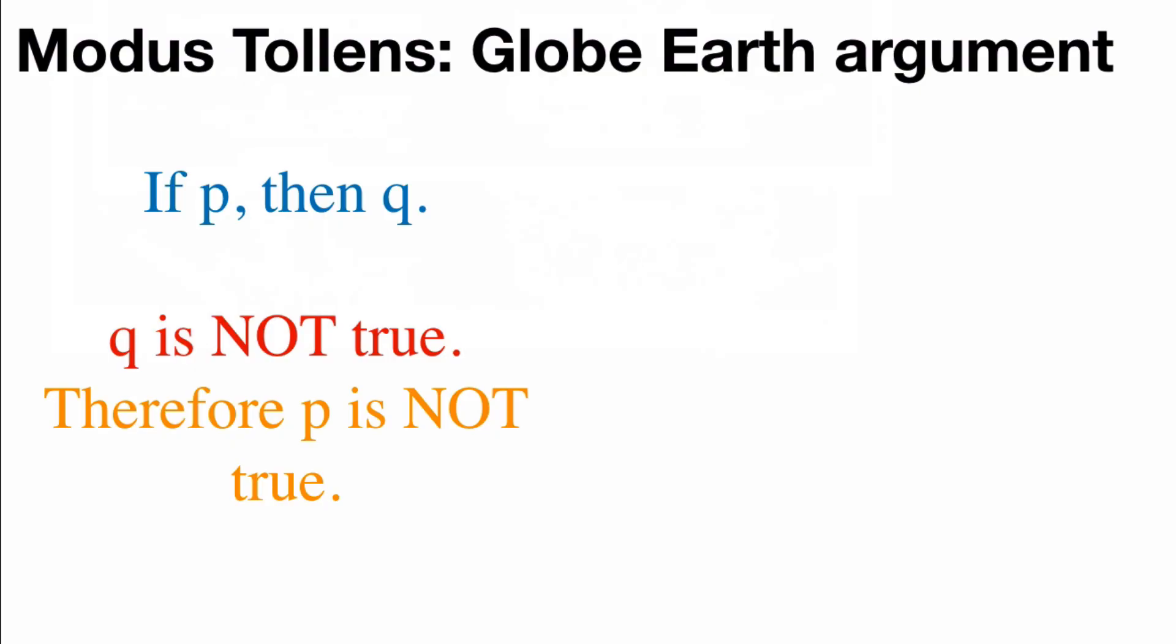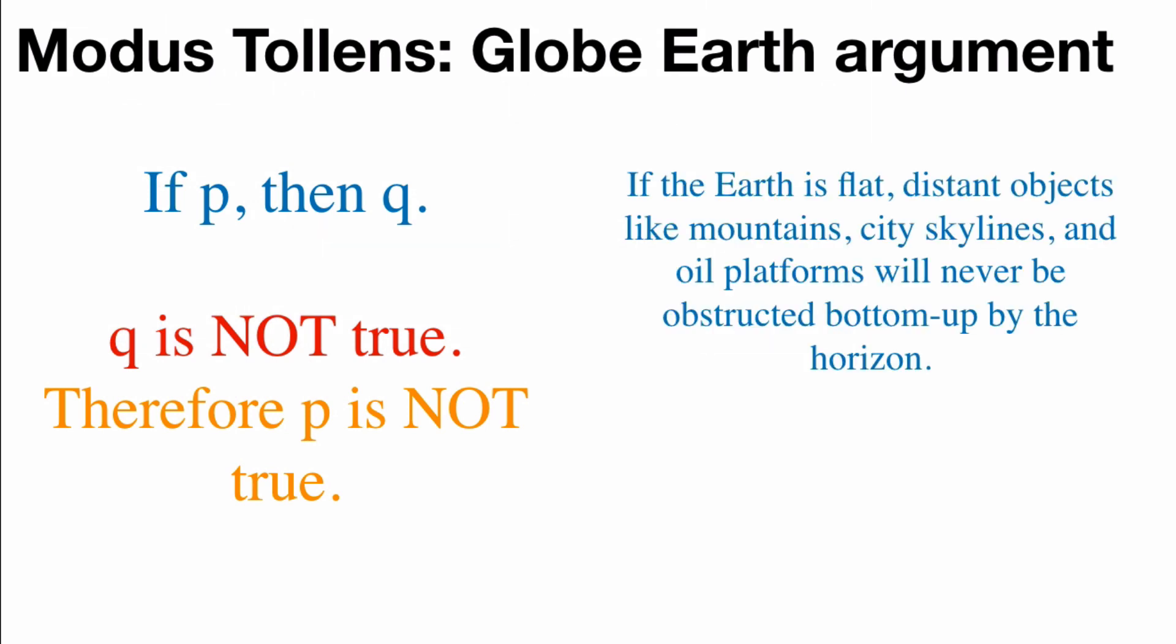Well, let's switch this thing around. Let's take a look at modus tollens from the globe earth side. So what would be the globe earth argument for using modus tollens? If the earth is flat, distant objects like mountains, city skylines, and oil platforms will never be obstructed bottom up by the horizon.